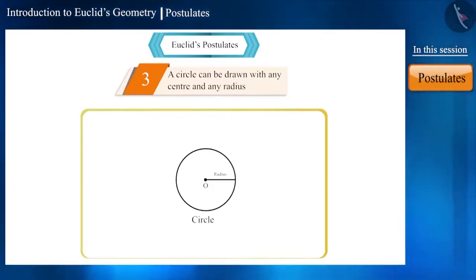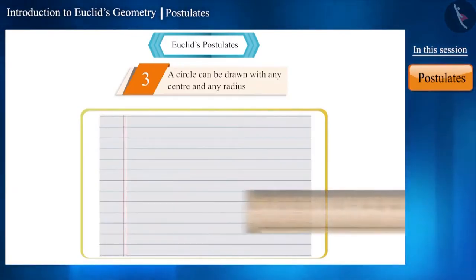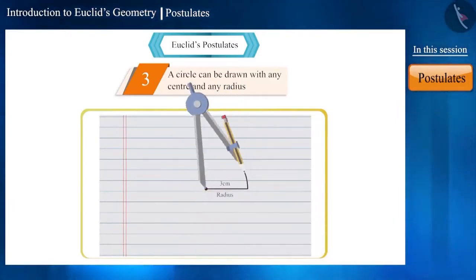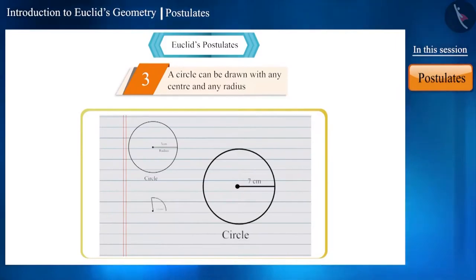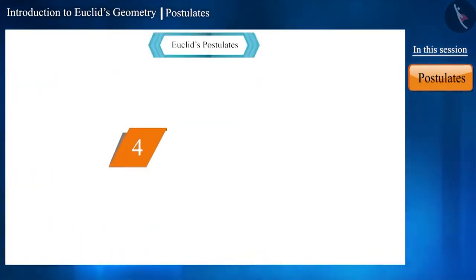Friends, by keeping this postulate in mind, on a piece of paper you can draw a circle with the help of a compass. We can see that we can draw infinite circles. Let's move to the next postulate.